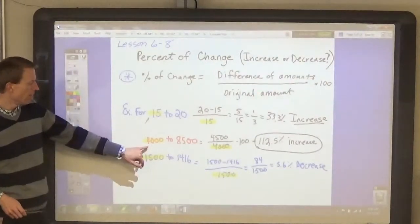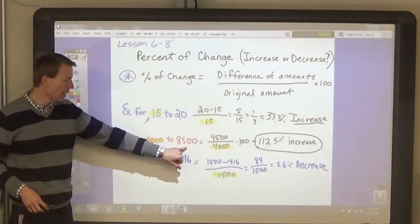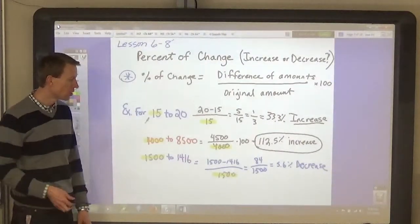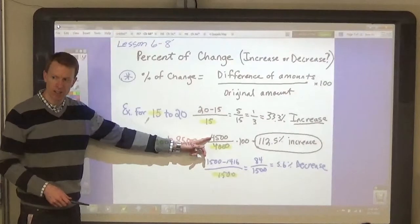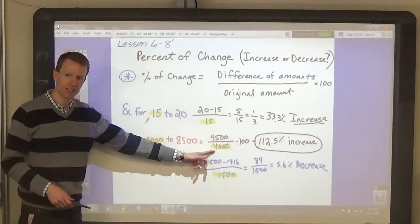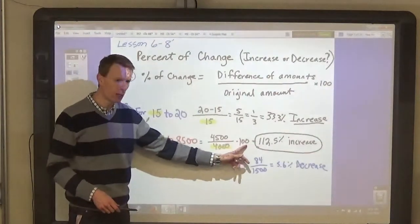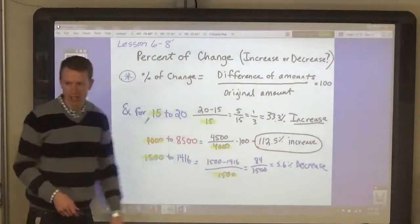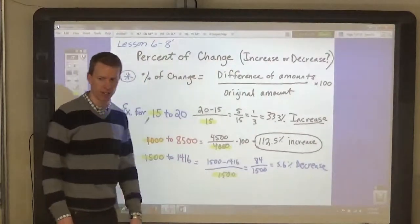So in this one, it started at 4,000 and it went up to 8,500. So the difference between these two numbers is 4,500. When we divide it by 4,000, you have a number bigger than 1. So when you multiply that by 100, you get over 100% increase—112.5% increase.